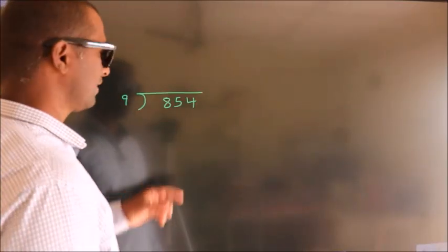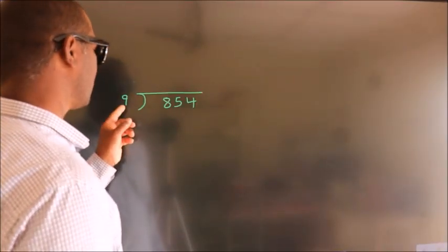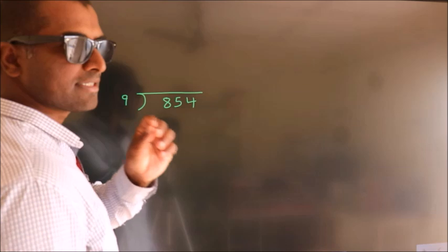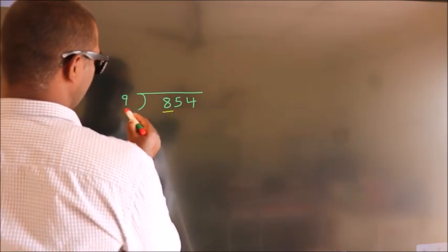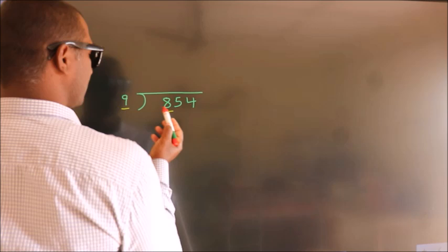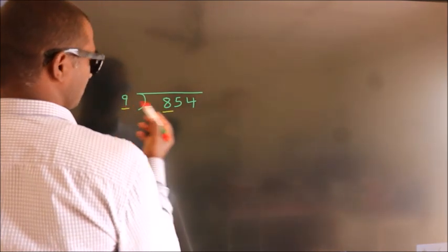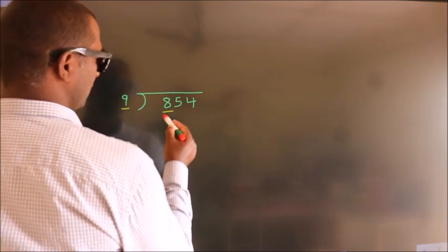How to divide 854 by 9. Here we have 8, here 9. 8 is smaller than 9, so we should take two numbers.